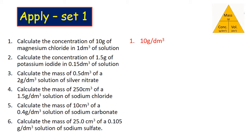Number two: Calculate the concentration of 1.5 grams of potassium iodide in 0.15 dm³ of water. That gives me 10 g/dm³.